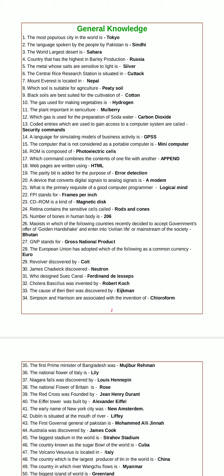FPI stands for frames per inch. CD-ROM is a kind of magnetic disc. The retina contains sensitive cells called rods and cones. The number of bones in the human body is 206. GNP stands for Gross National Product. GDP is Gross Domestic Product. The European Union common currency is Euro.